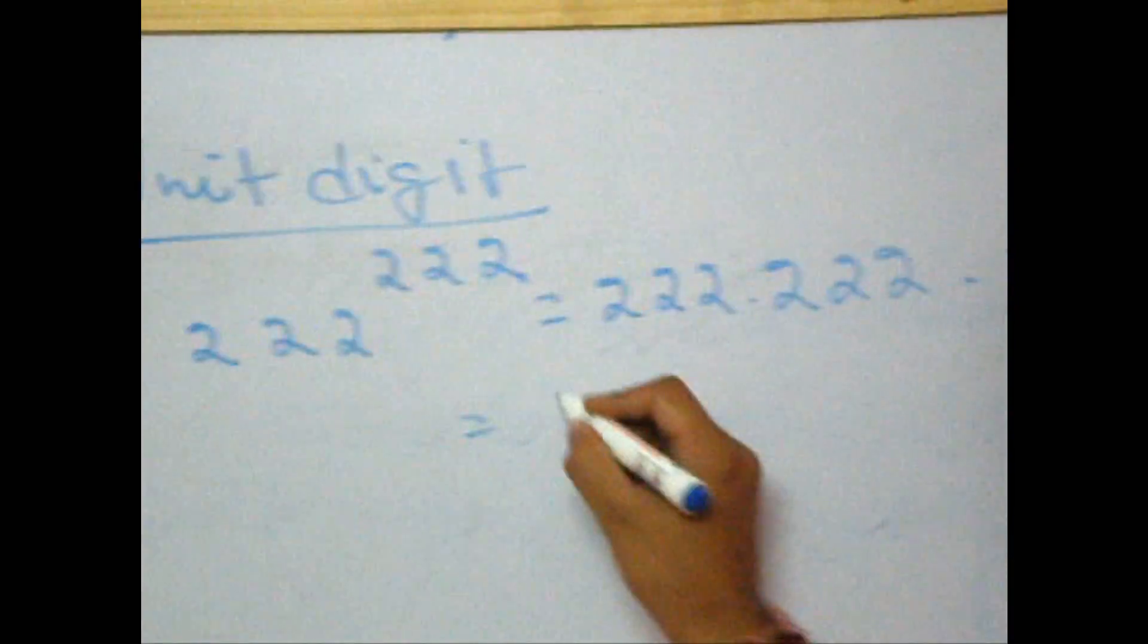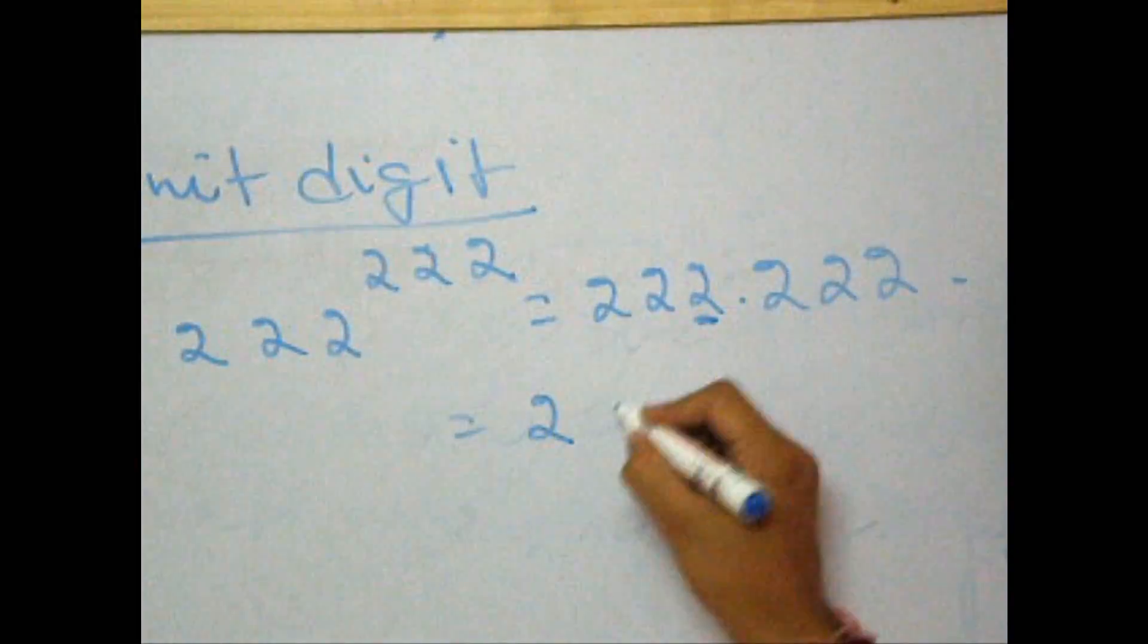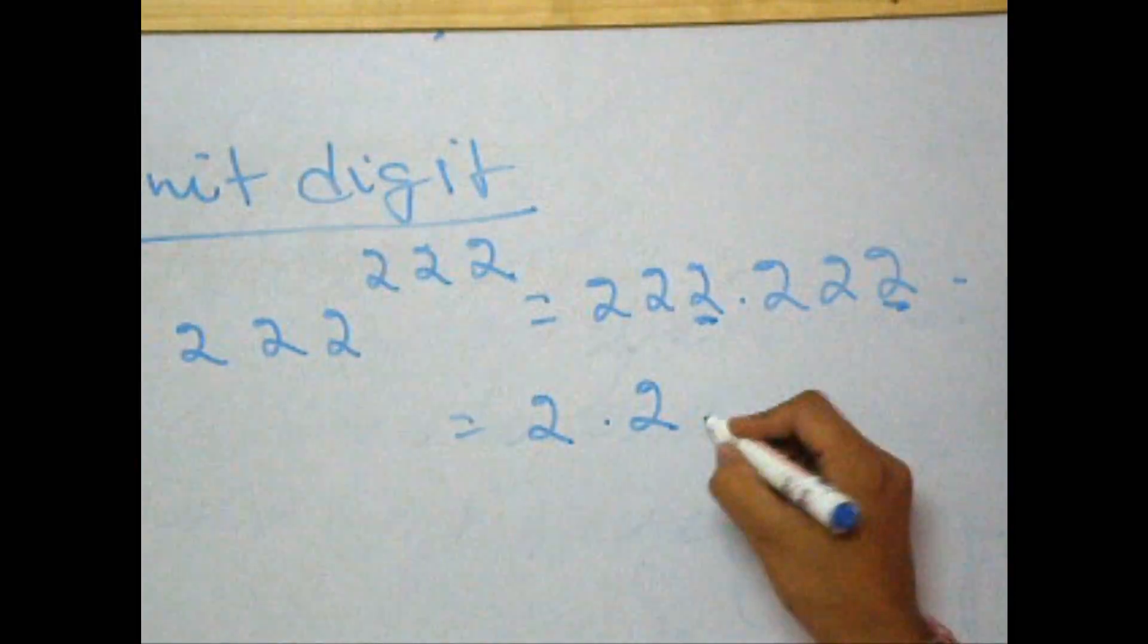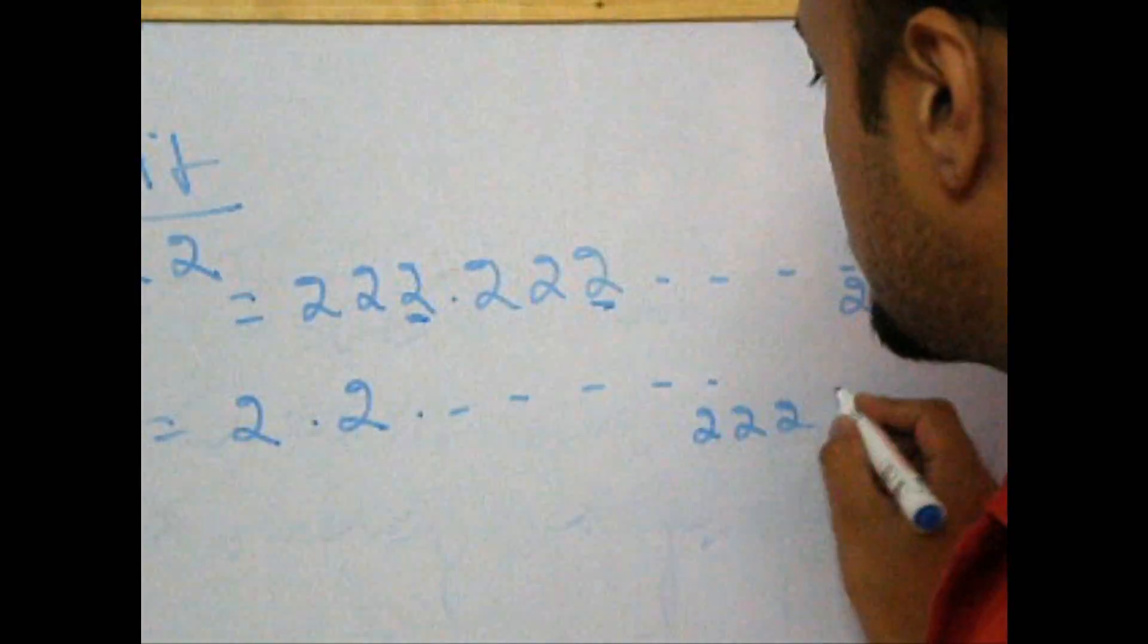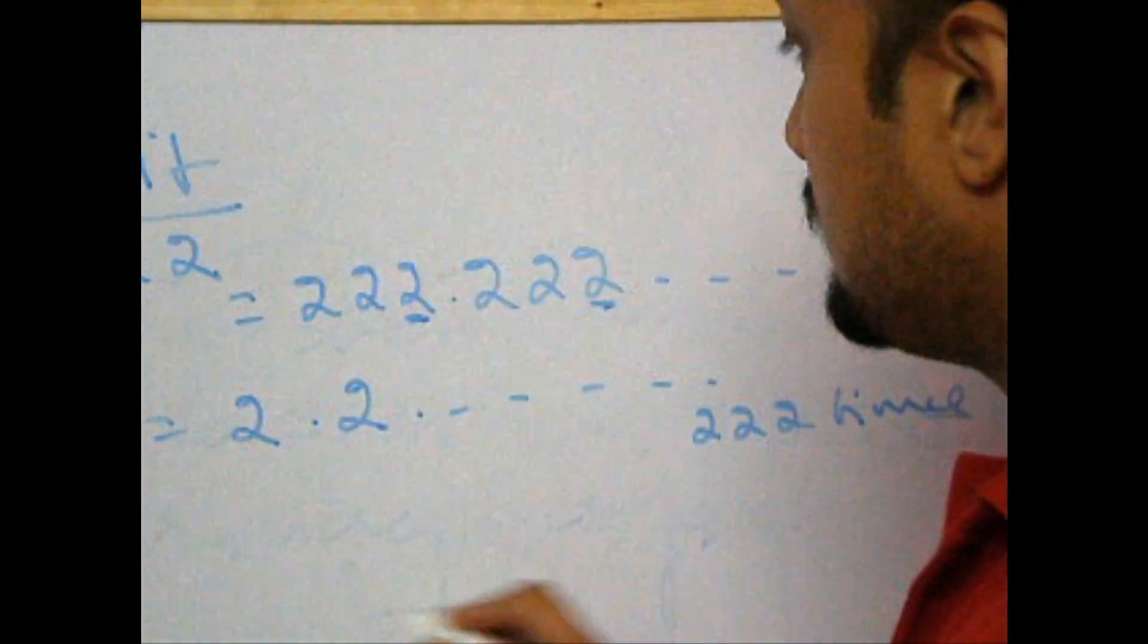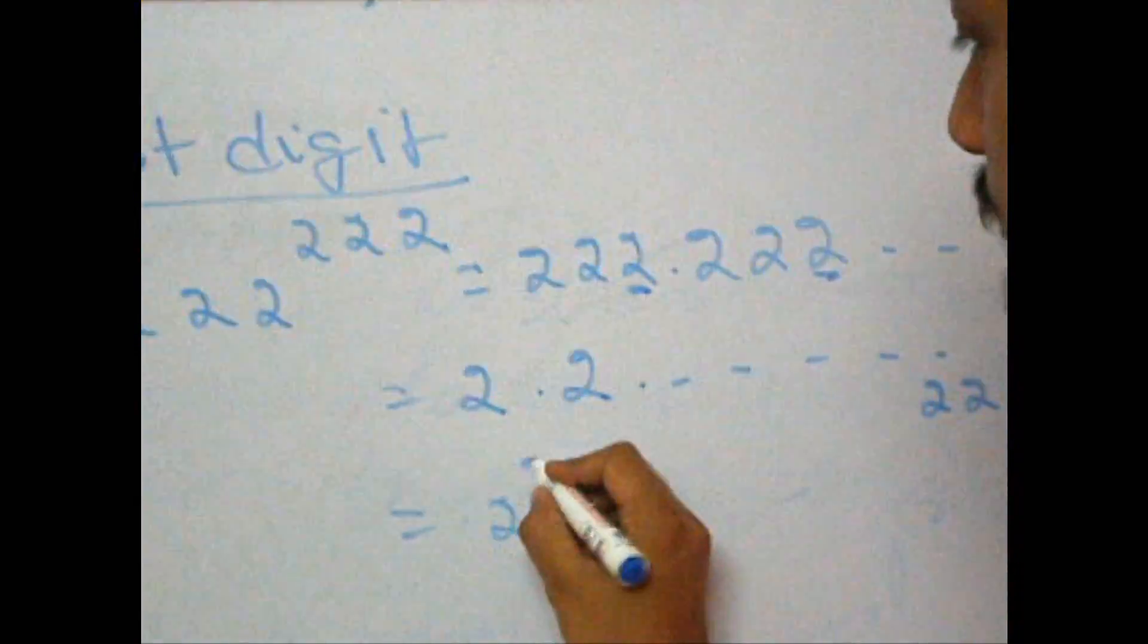So, this question is as good as 2 into 2 into 2 and so on, 222 times. Now, this is as good as 2 to the power of 222.